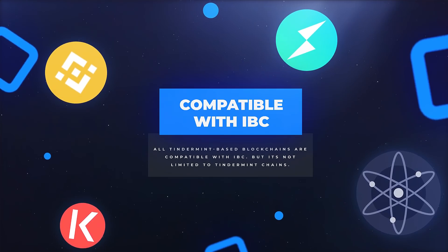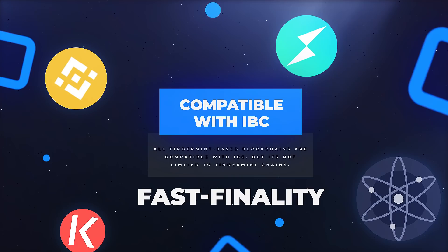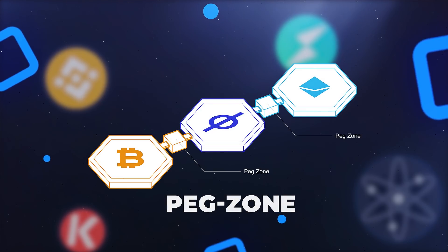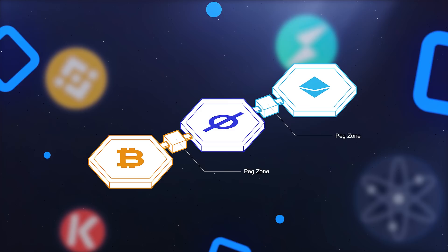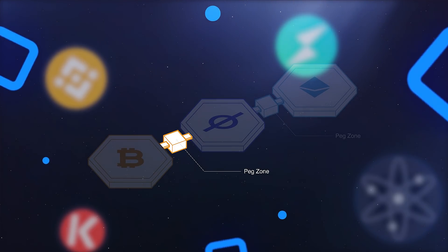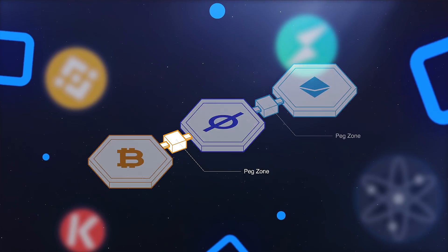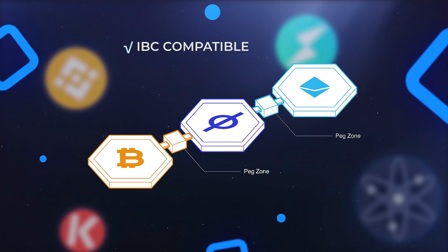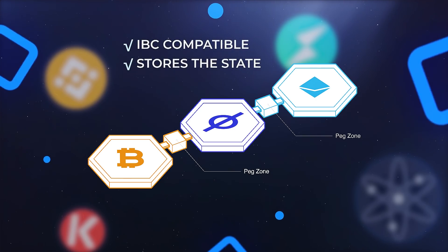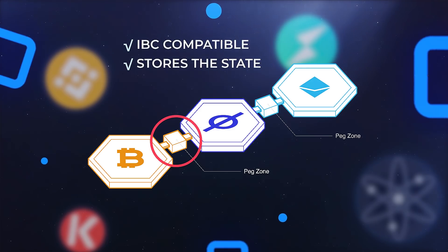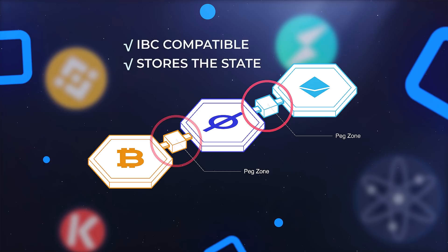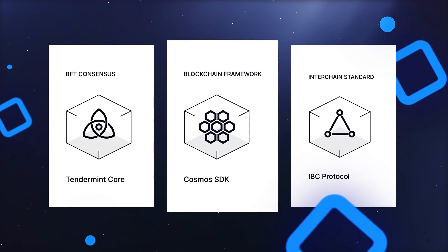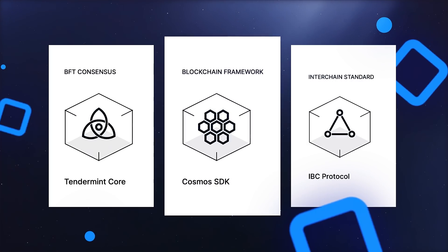All Tendermint-based blockchains are compatible with IBC, but it's not limited to Tendermint chains. IBC can connect any two blockchains that have the fast finality attribute, which most blockchains have. Cosmos proposes a peg zone concept for chains without fast finality, such as Bitcoin. A peg zone is a Tendermint proxy chain that is always monitoring the state of a non-Tendermint blockchain. The attached peg zone can then be used to connect blockchains because it is IBC compatible and stores the state of the other blockchain. Two peg zones are joined to each chain, and then the peg zones are connected to each other.